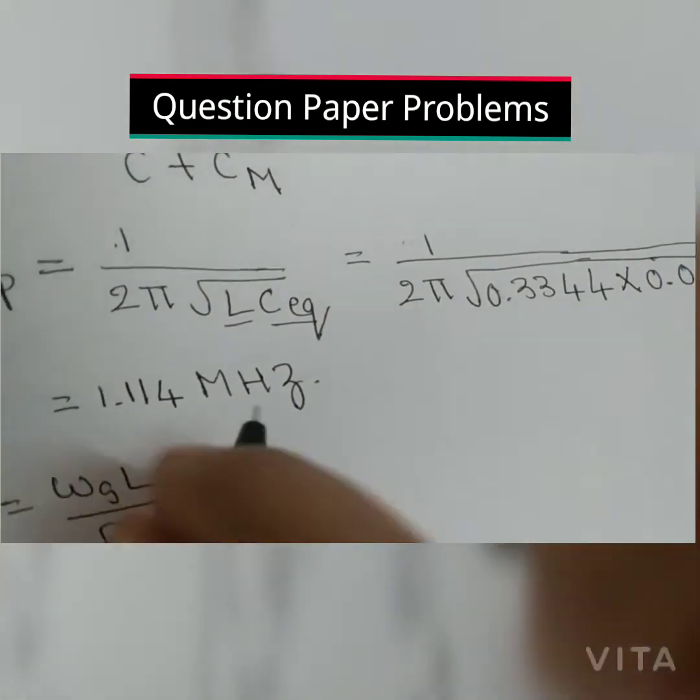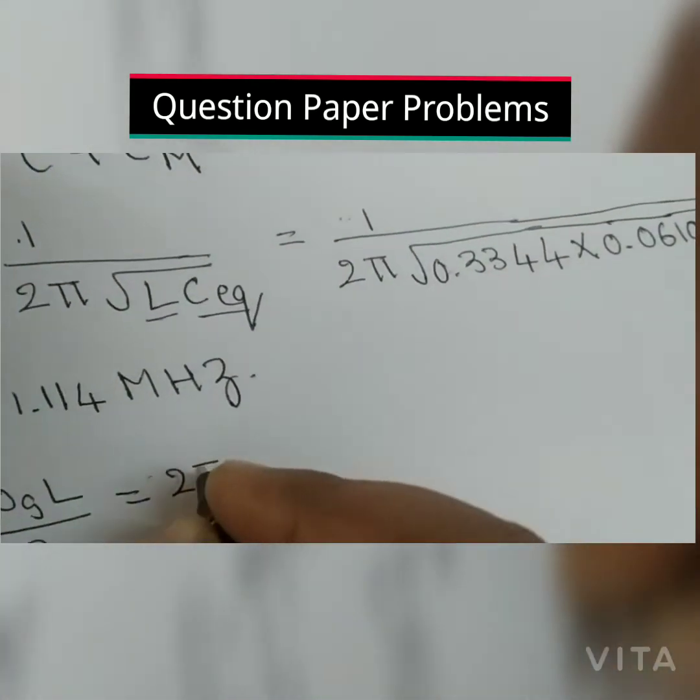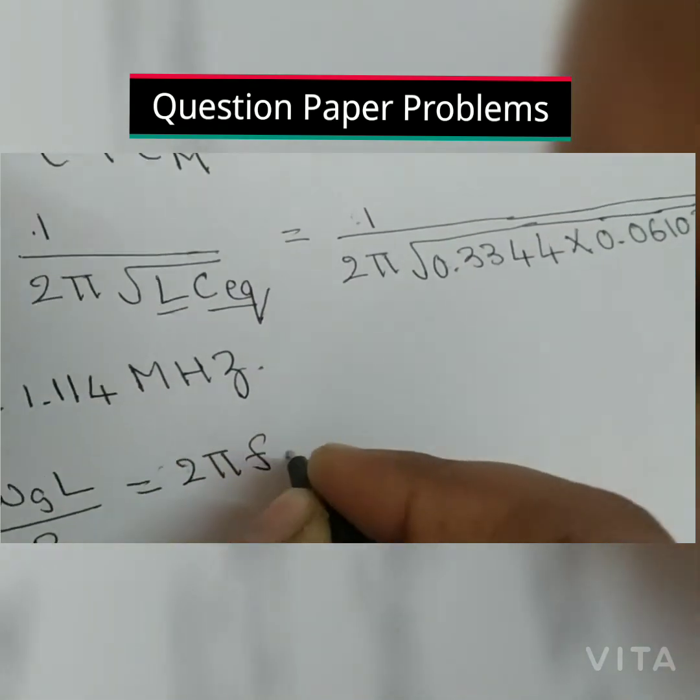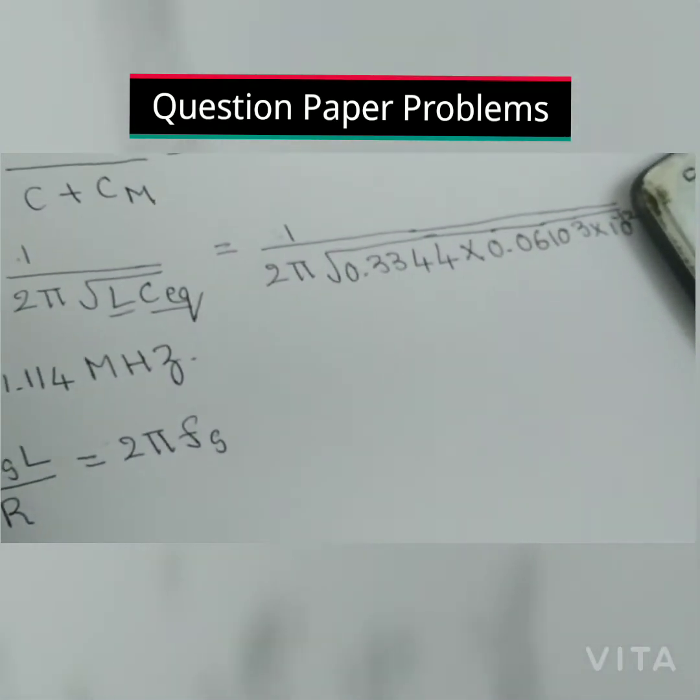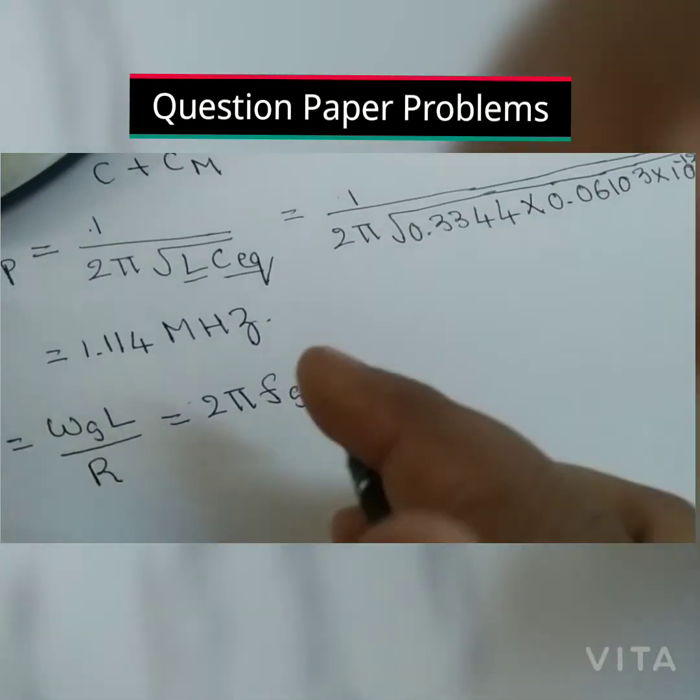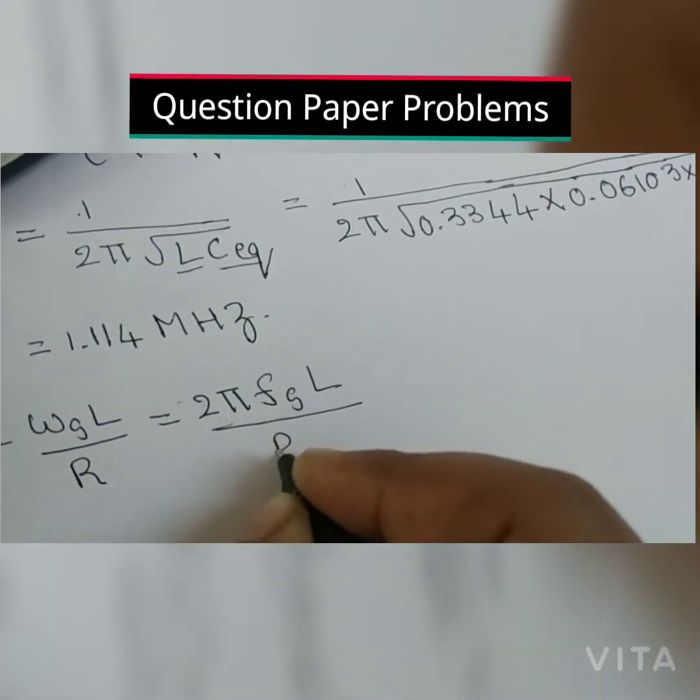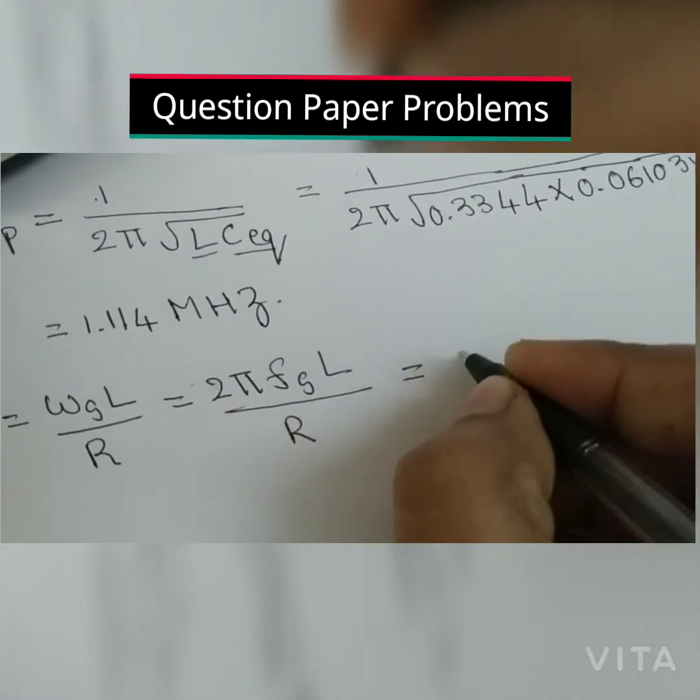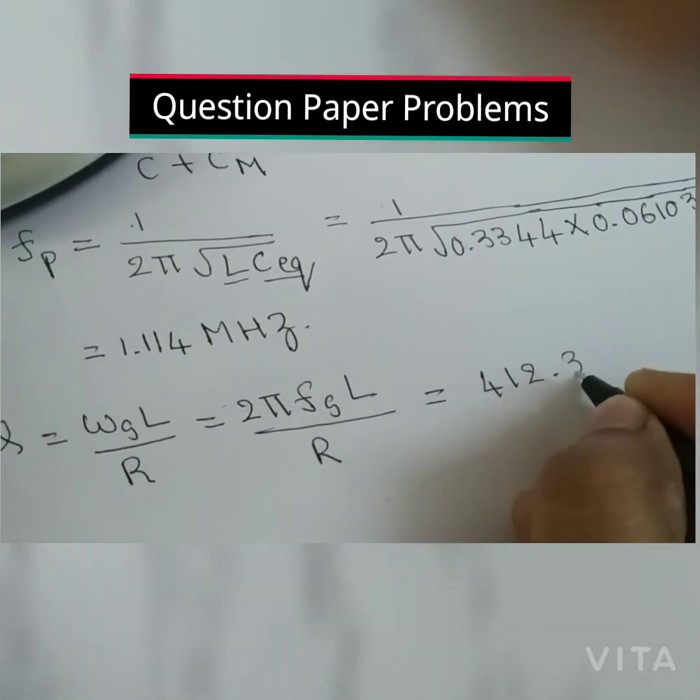So we know the value of L. Substitute 2 pi Fs times L divided by R value and you will get the answer 412.388.